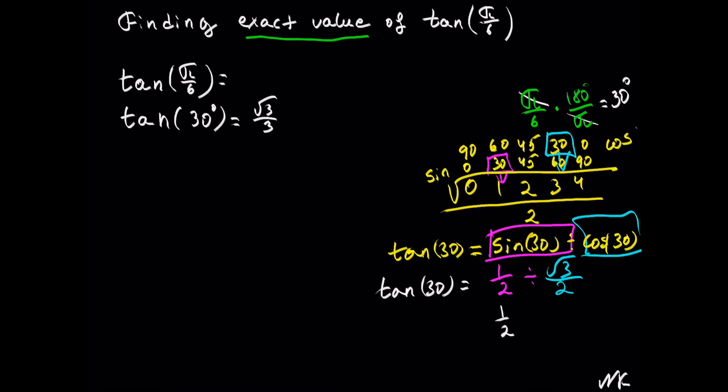We have 1/2. Change division into multiplication, flip the second fraction, so we get 2/√3. The 2's will cancel.